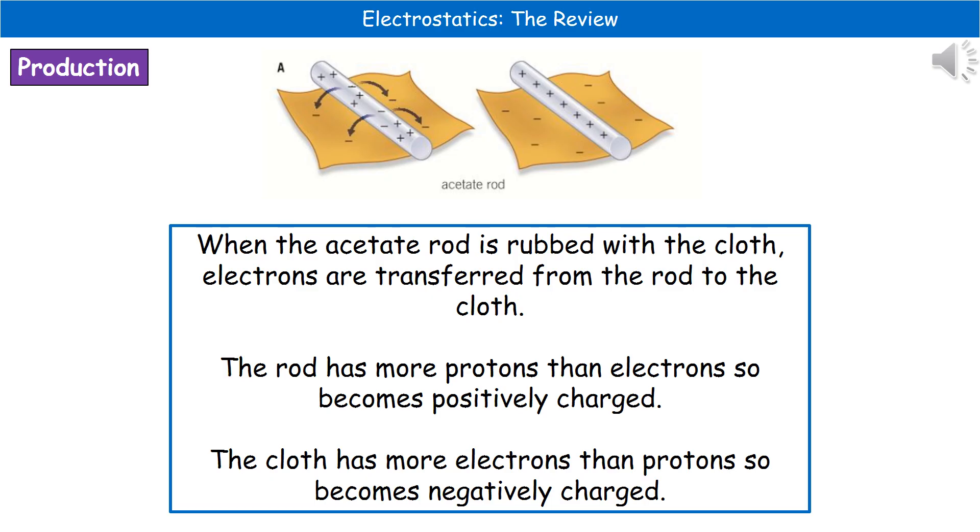Looking at an example, we've got an acetate rod which we're going to rub with a piece of cloth. Because both the acetate rod and the cloth are insulators, when we rub them together, the electrons are transferred from the rod to the cloth. We end up with more electrons on the cloth than the rod, therefore the cloth becomes negative and the rod becomes positively charged.